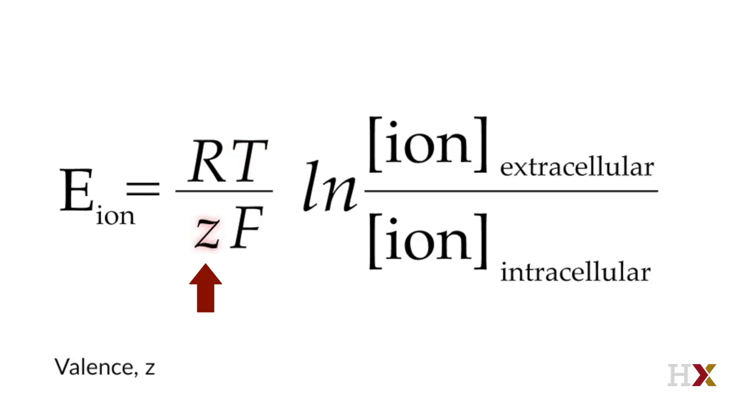Valence, in this case, can be thought of as the net charge of the ion in solution. For instance, both sodium and potassium are plus 1. Chloride is minus 1, and calcium is plus 2.